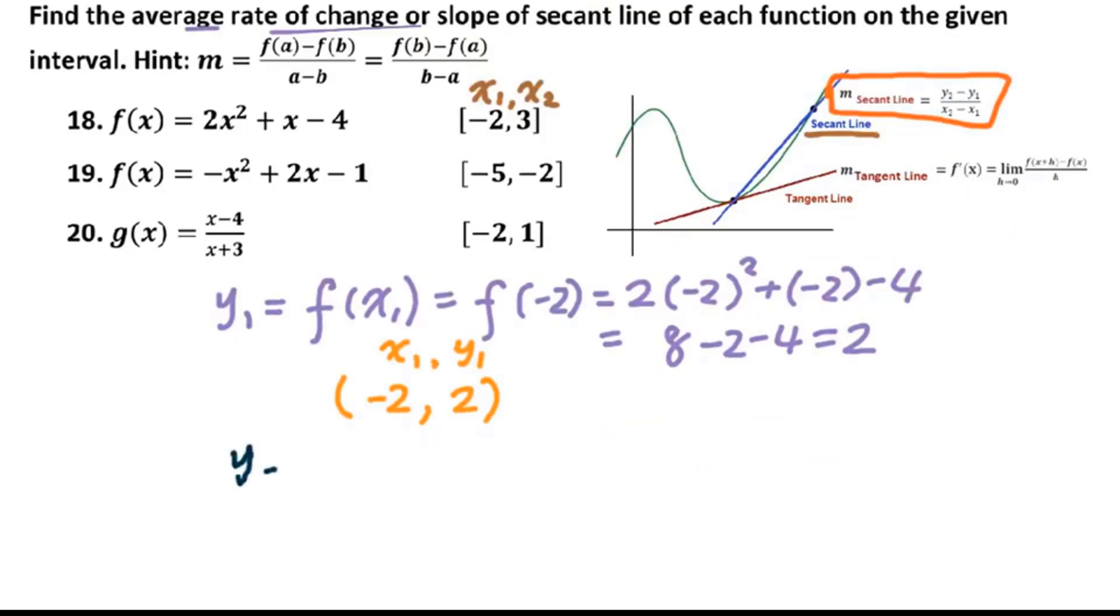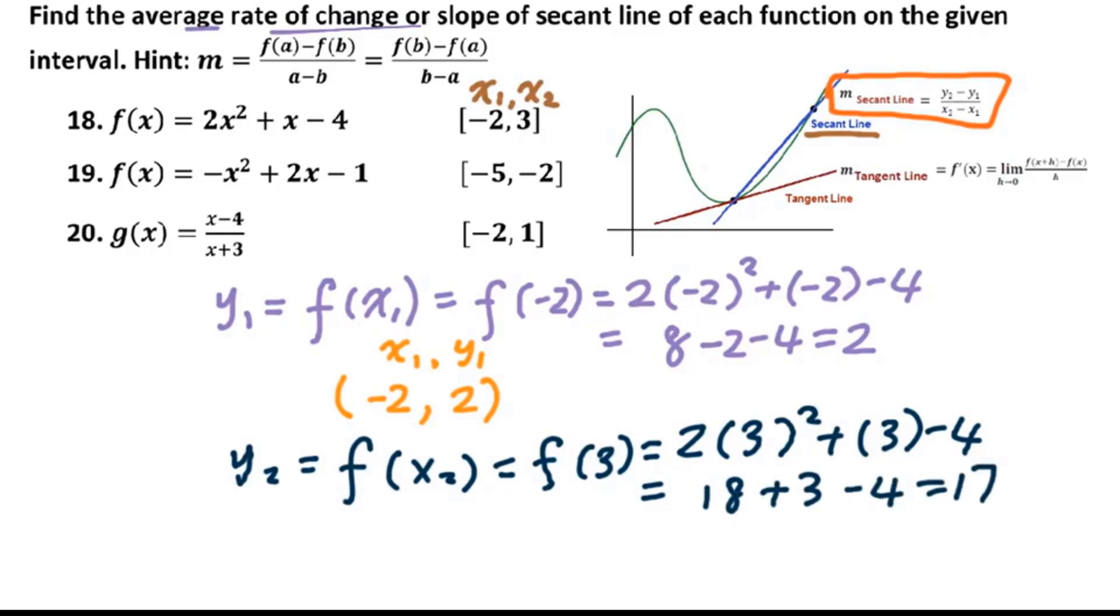Now we will figure out y2. That's f of x2, which is f of 3. So we plug 3 into the function. We got 2 times 3 squared plus 3 minus 4. We got 18 plus 3 minus 4. That is 17. Therefore 3, 17. That is x2, y2.